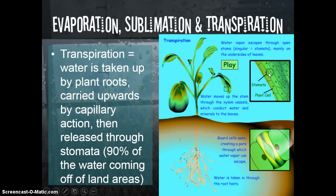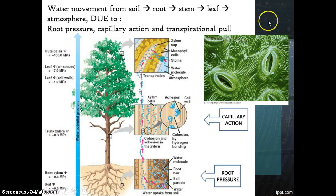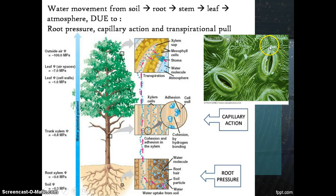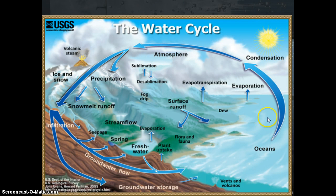The water travels up through the xylem and gets released through cells called stomata in the leaves. This is so important because 90% of the water that comes off of land areas is actually coming off through transpiration, not through straight evaporation. You should remember from biology the concepts of cohesion and adhesion, which make this capillary action possible. This is an electron micrograph of stomata cells in plants — they have guard cells that allow them to open and close to let out more or less water depending on the plant's needs.